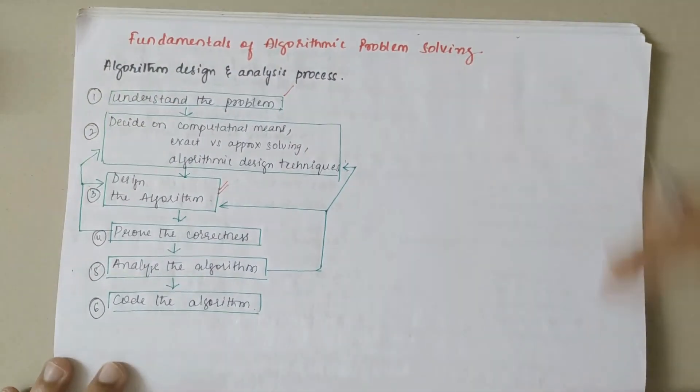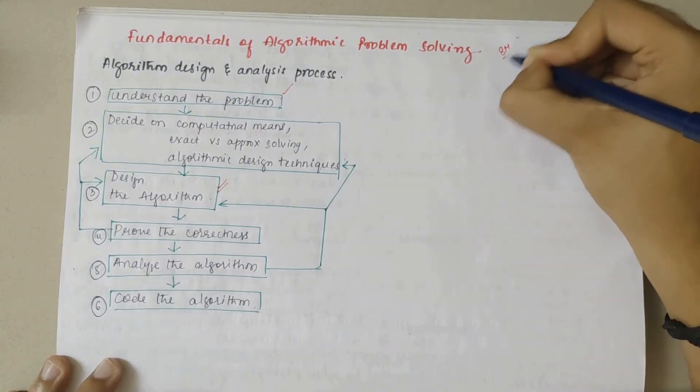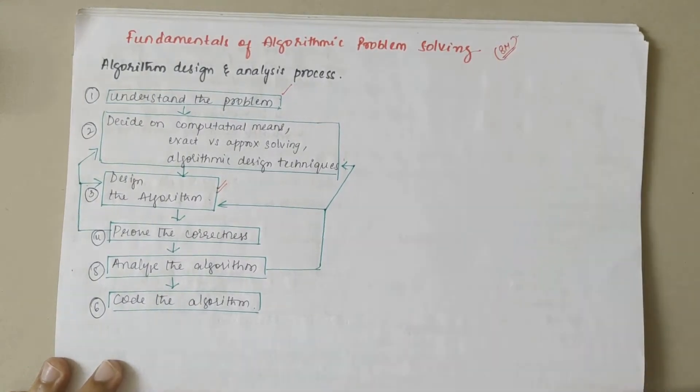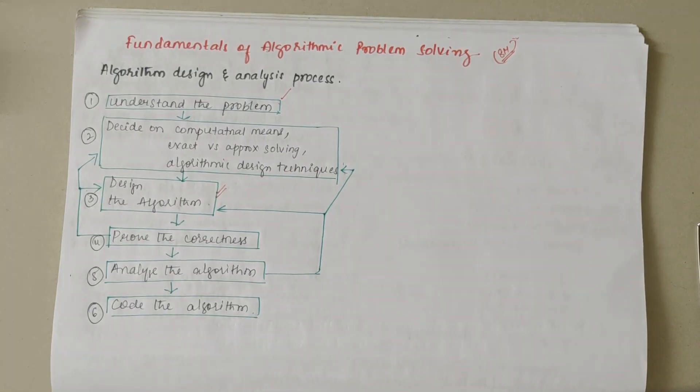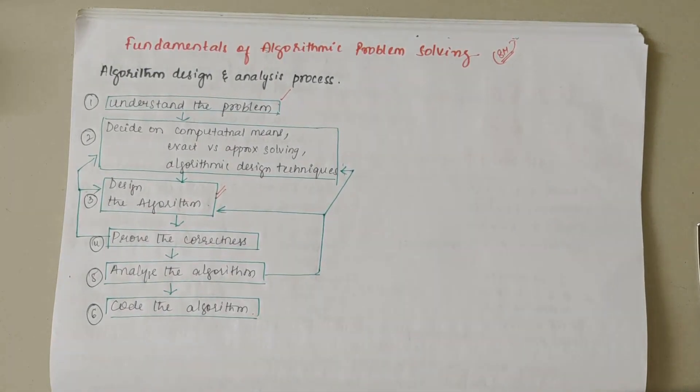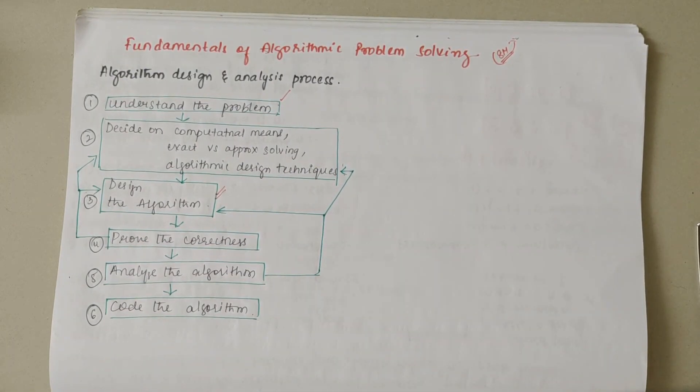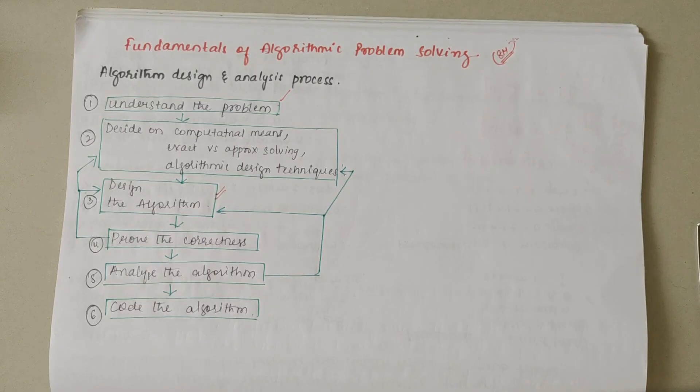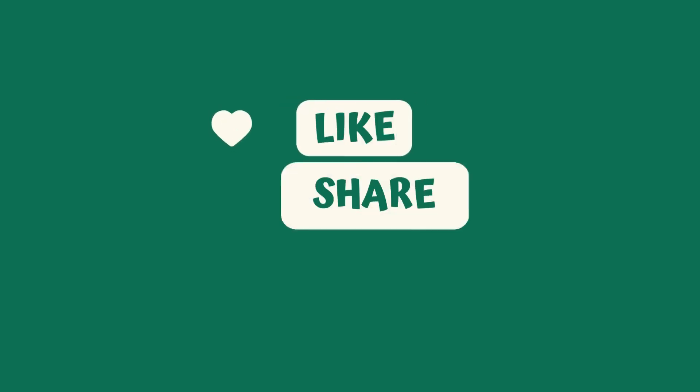This was about fundamentals of algorithmic problem solving. This could be asked for eight marks. It is a pretty important question in semester exams or internal exams. So stay tuned for the fundamentals of algorithm analysis of algorithmic efficiency part. We'll discuss analysis framework, asymptotic notations, basic efficiency classes in the next video. Thank you.